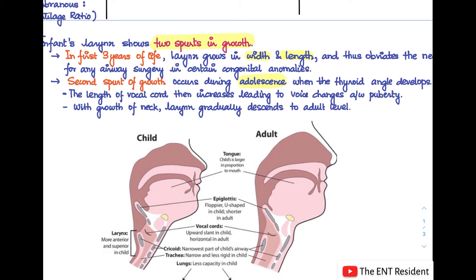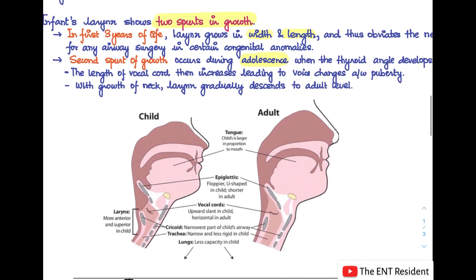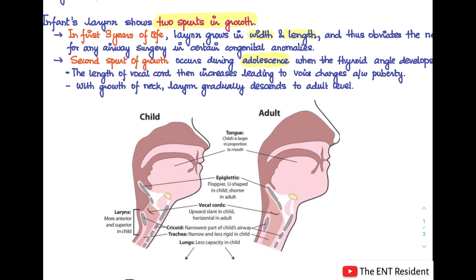Looking at an anatomical picture: in children the tongue is proportionally larger relative to the mouth. The epiglottis is floppier and U-shaped in infants, shorter in adults. The vocal cords have an upward slant in children but are more horizontal in adults. The cricoid is the narrowest part of the child's airway, and the trachea is narrower and less rigid in infants. The larynx is also more anteriorly and superiorly placed in children.